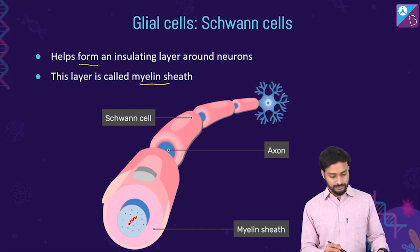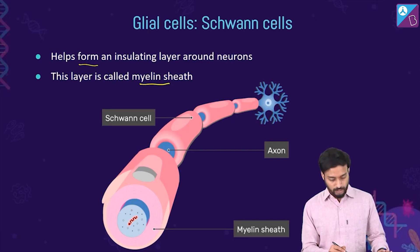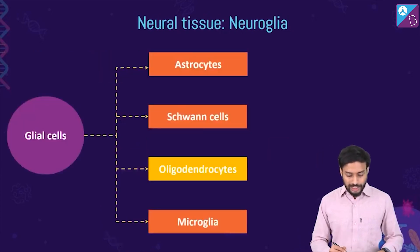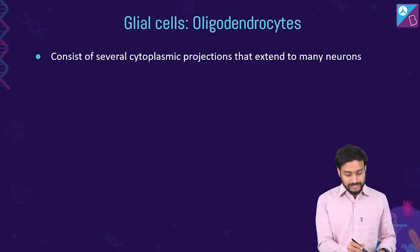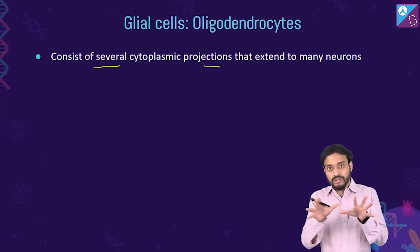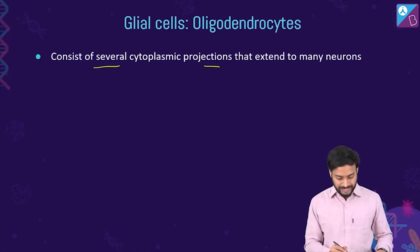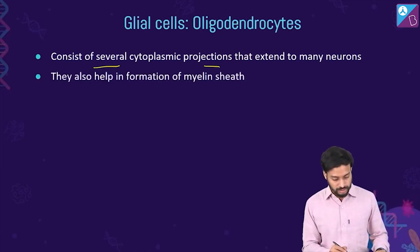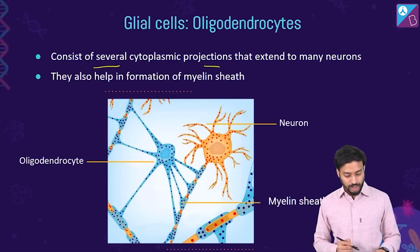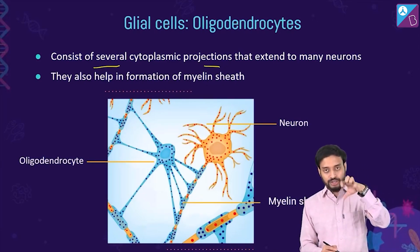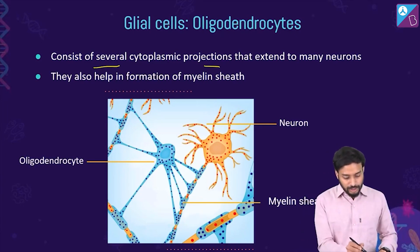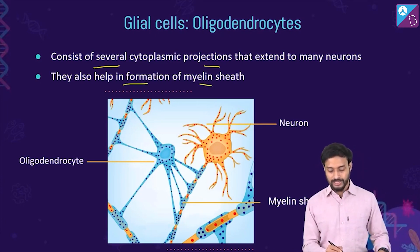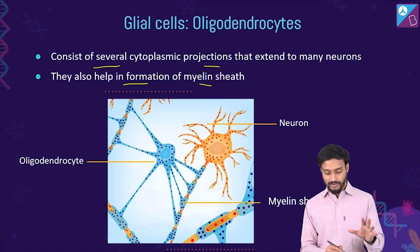Oligodendrocytes consist of several cytoplasmic projections that extend to many neurons. These projections also help in the formation of the myelin sheath.